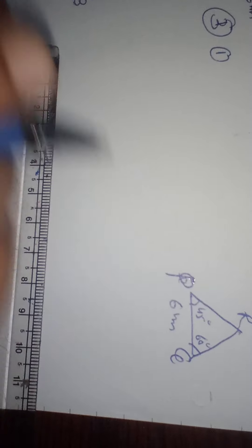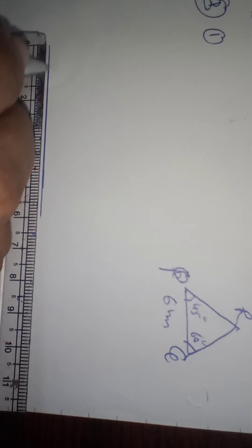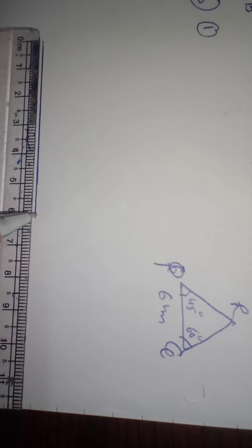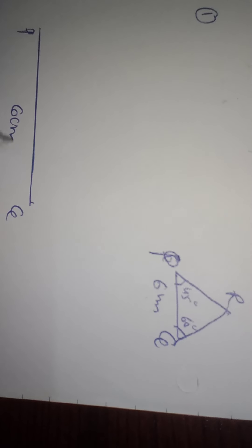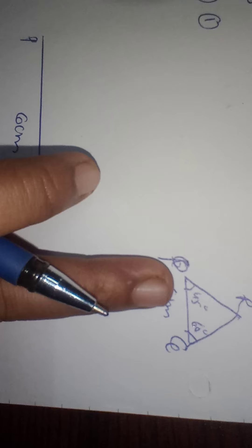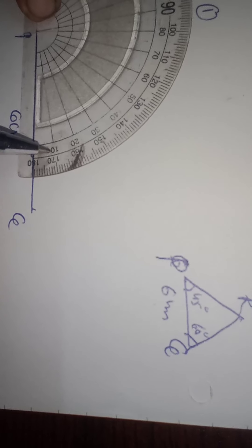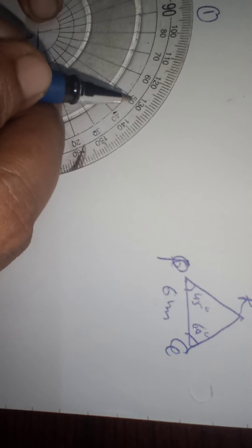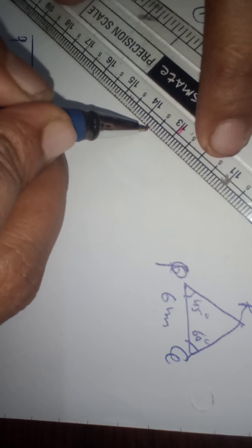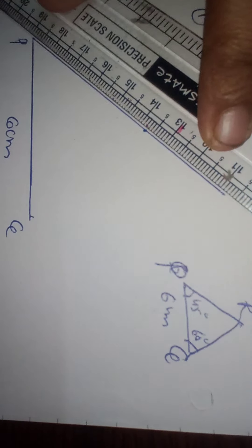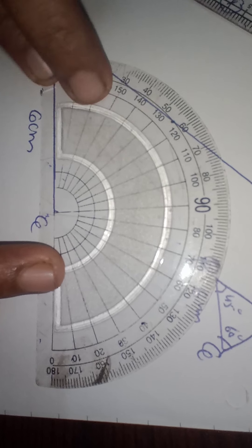For this you can use the compass. First, draw the baseline PQ as 6 cm. Now at P, we have to draw 45 degrees — put the protractor at P. From 0, count 10, 20, 30, 40, 50 and mark 45 in between. Using the scale, join the vertex P to this point. Now at Q, we have to mark 60 degrees.